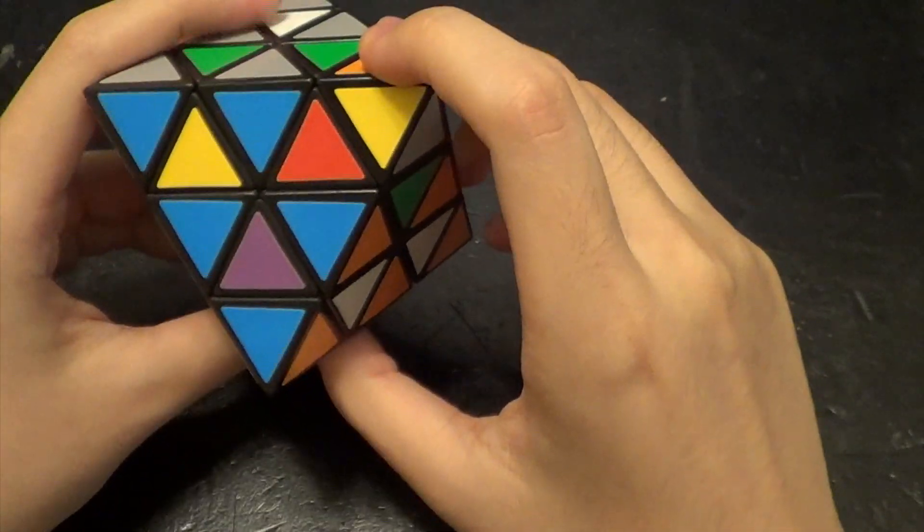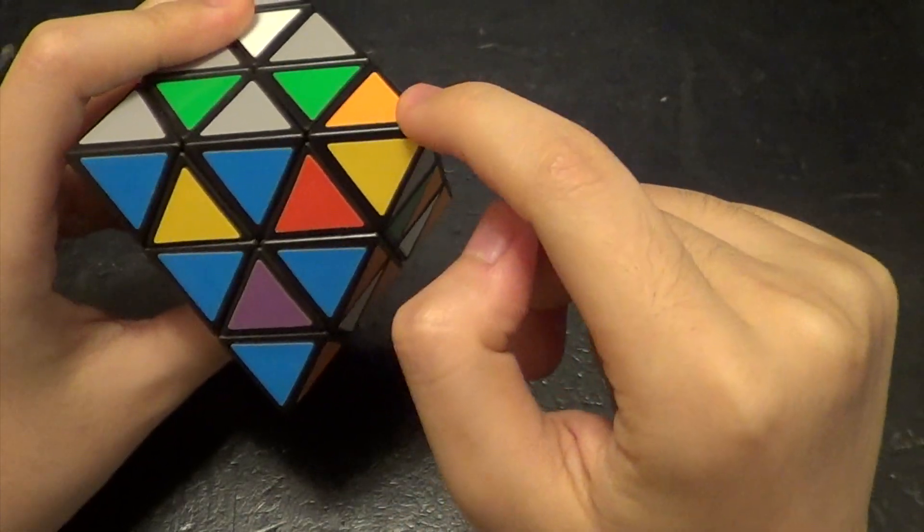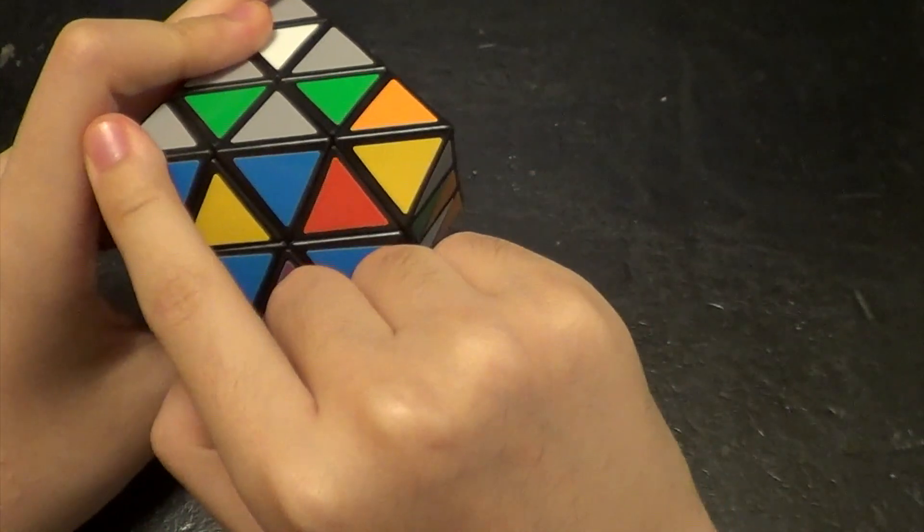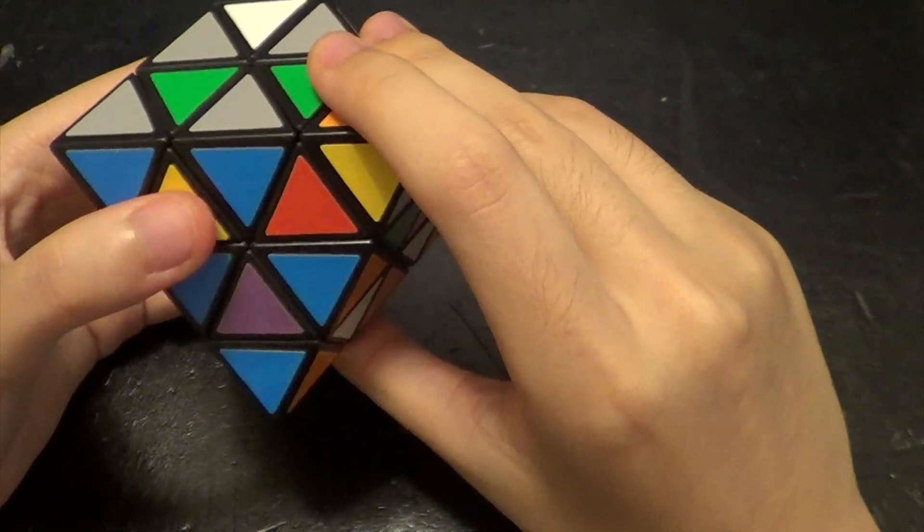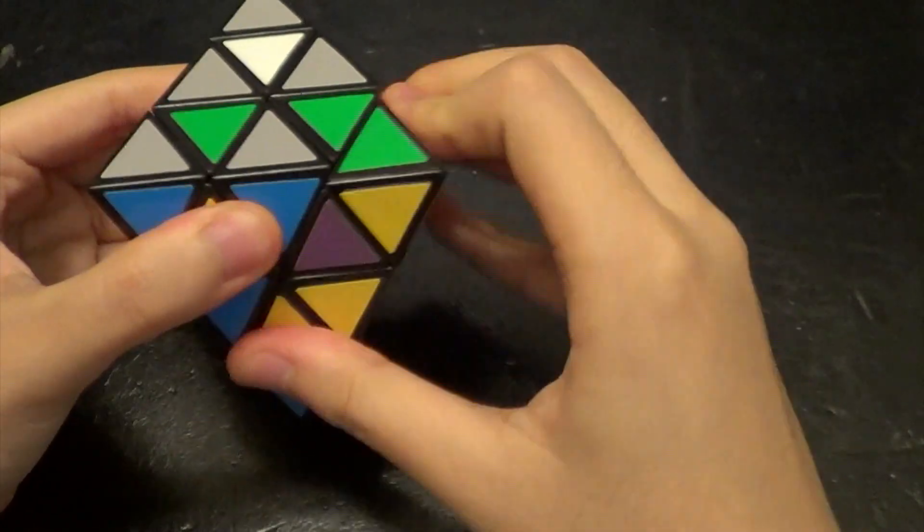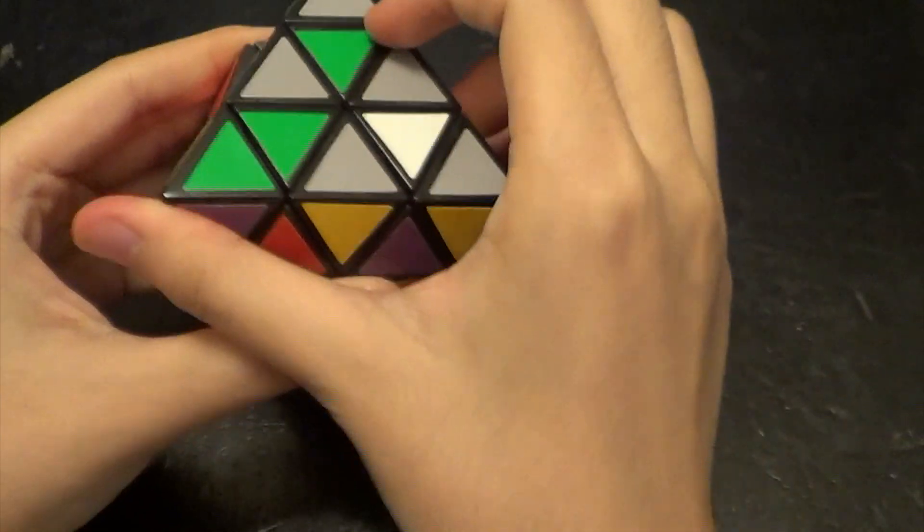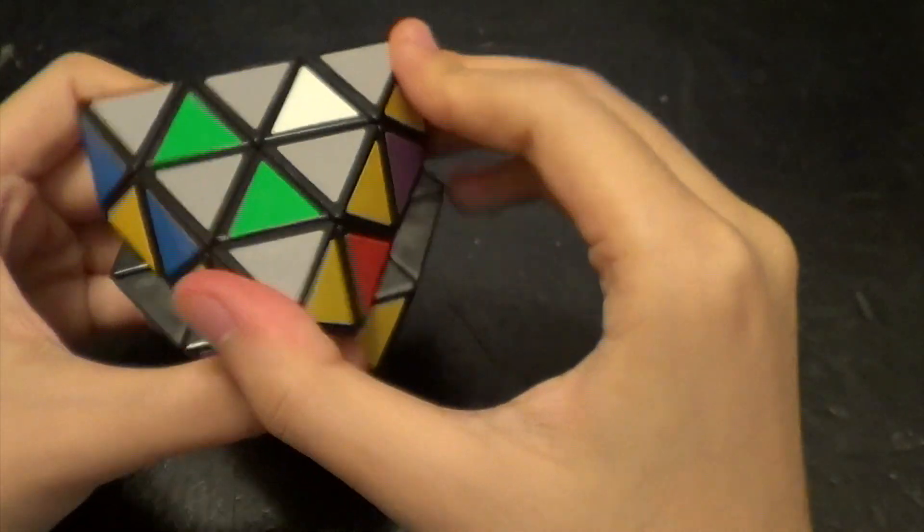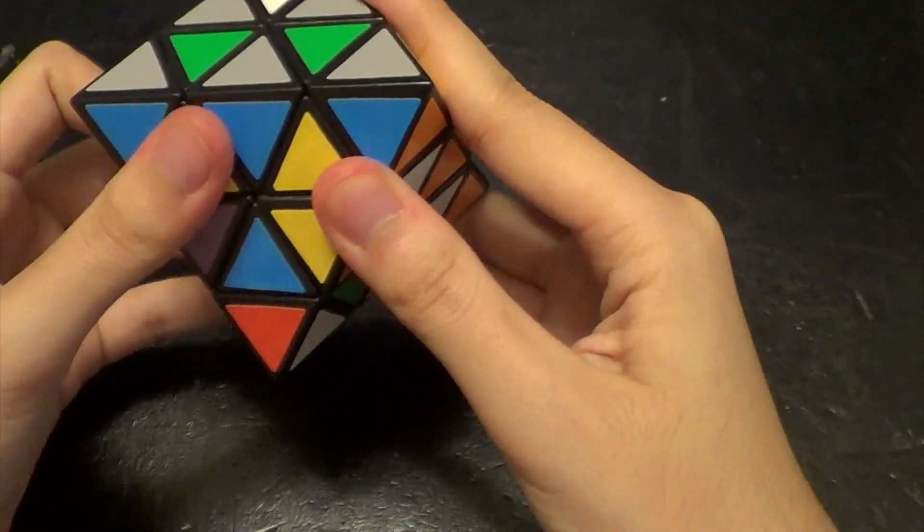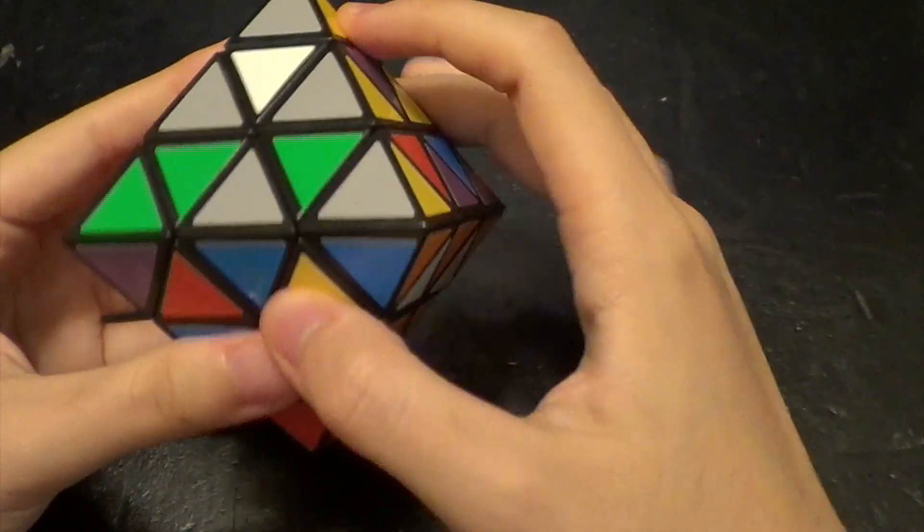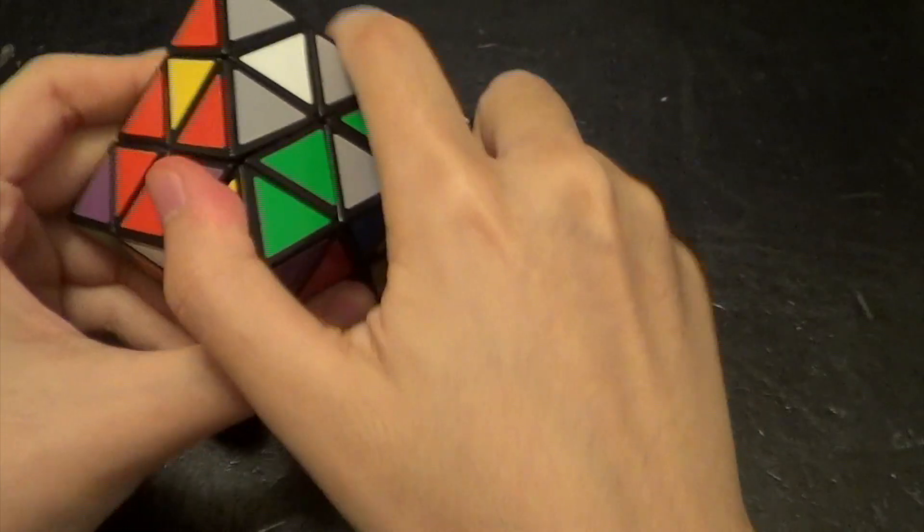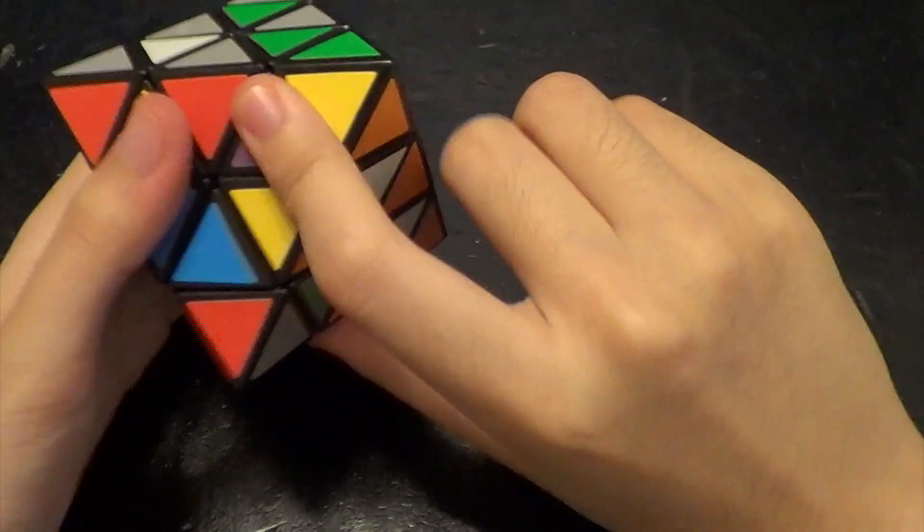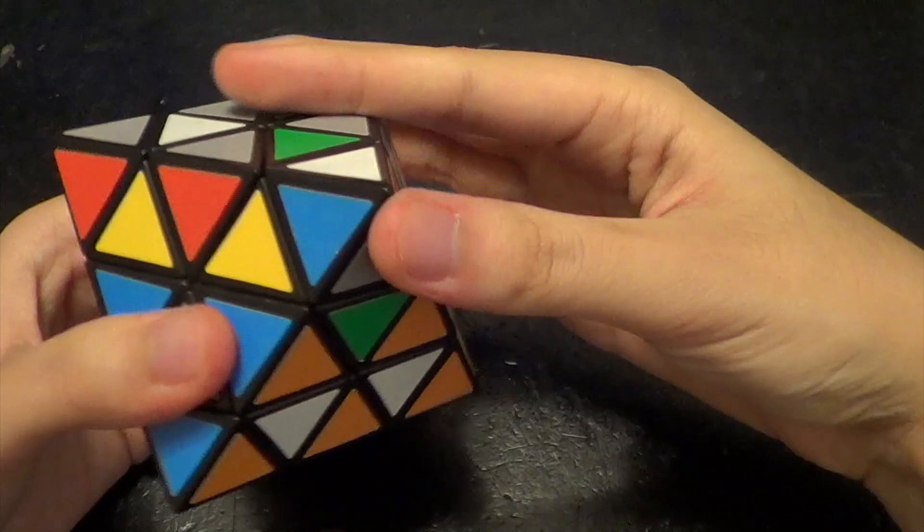So essentially this is the upper right, and then this is the upper left, and then we can use this move sequence: R', U, L', U', L, U', R, U.